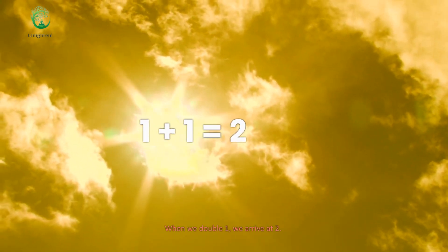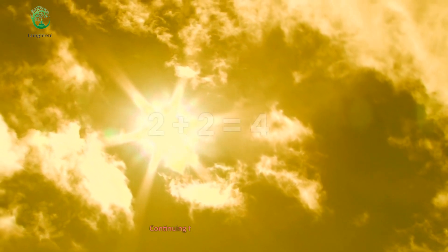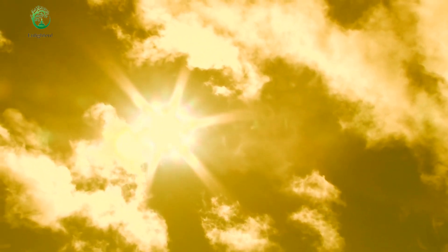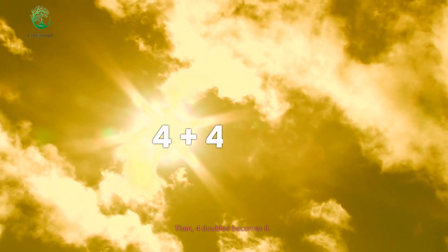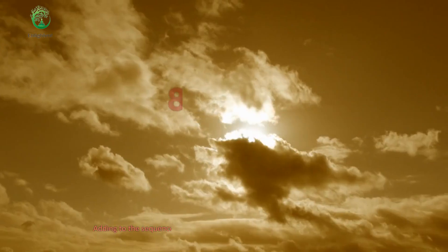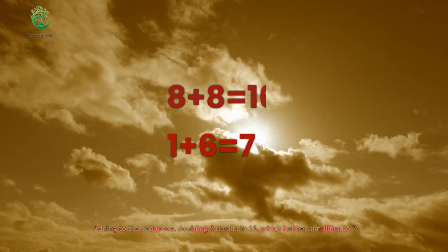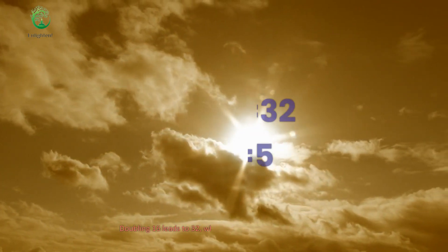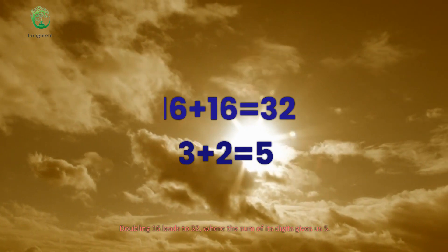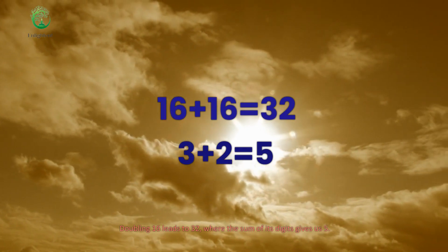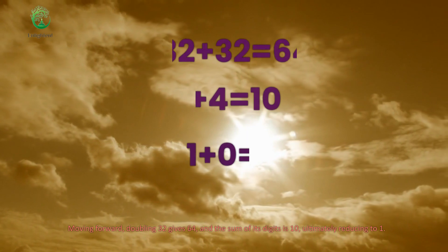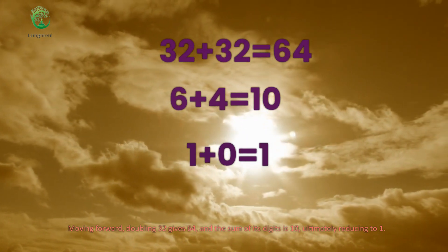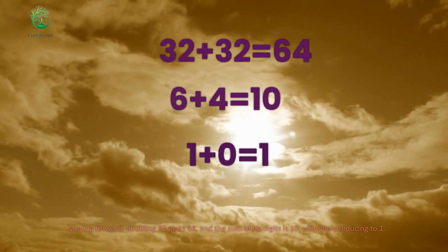Let us commence with the number 1 and embark on a doubling journey. When we double 1, we arrive at 2. Continuing this process, doubling 2 yields 4. Then, 4 doubled becomes 8. Adding to the sequence, doubling 8 results in 16, which further simplifies to 7. Doubling 16 leads to 32, where the sum of its digits gives us 5. Moving forward, doubling 32 gives 64, and the sum of its digits is 10, ultimately reducing to 1.